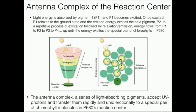The antenna complex — a series of light-absorbing pigments — accepts UV photons and transfers them rapidly to a special pair of chlorophyll molecules in P680's reaction center. And it really technically isn't transferring the UV photons themselves — it's transferring the energy of the UV photons. Notice this arrow that says decreasing energy going down, because every one of these energy transfers is going from high energy to low energy.